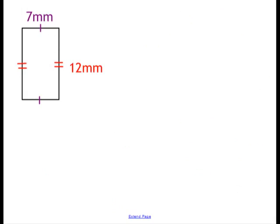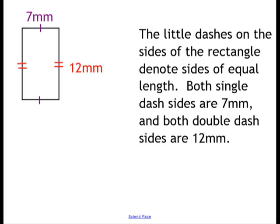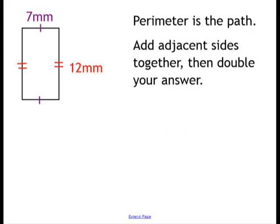Let's try that in a different shape. First of all, we've got some different notation in this shape. Now two sides have got a single dash, and the two red sides have got a double dash. The little dashes on the sides of the rectangle denote sides of equal length. Both the single dashed sides are 7mm, and both the double dashed sides are 12mm. The opposite sides are equal.